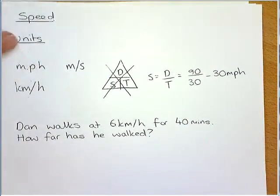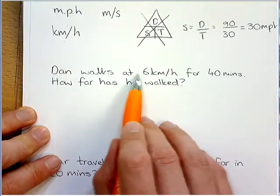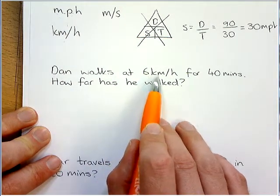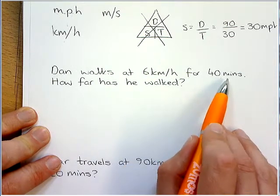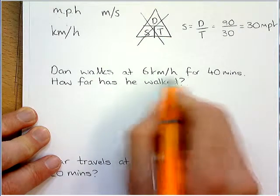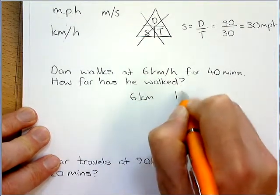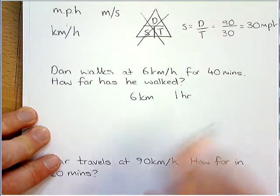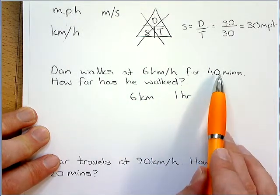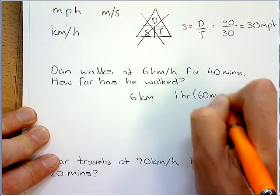So, let's have a look at some questions. We're told here that Dan is walking at an average speed of 6 kilometers per hour for 40 minutes. How far has he walked? So, I'm going to break this down into simpleness, basically. So, that's 6 kilometers in one hour. But he hasn't walked for a whole hour. He's only walked for 40 minutes. So, what I'm going to put here is I'm going to say, well, that's also 60 minutes. I know that.